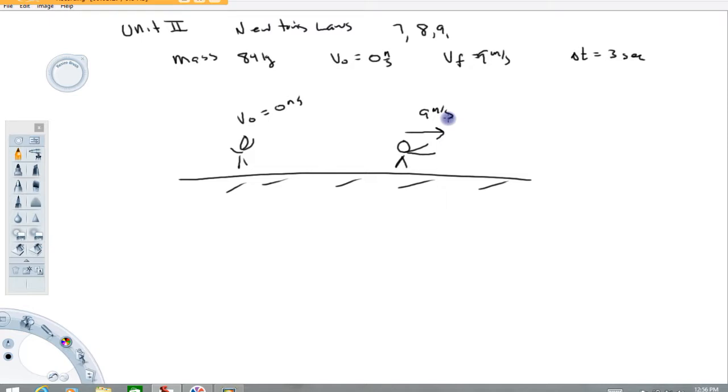Part A says what is the runner's acceleration, so you can calculate the acceleration from how acceleration is mathematically calculated: delta V over delta T. Part B asks what is the net force acting on the runner during this time frame. That's a Newton's second law question: net force equals mass times acceleration, where the mass is given in the problem.